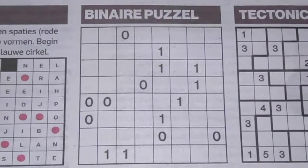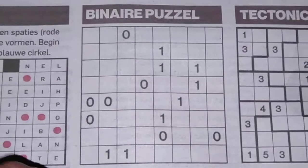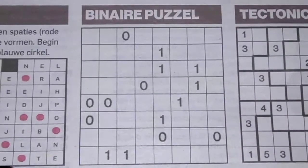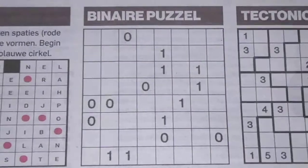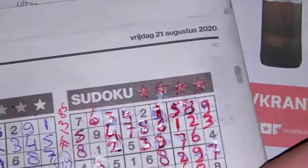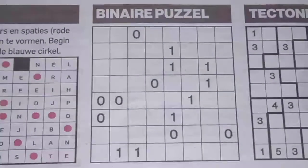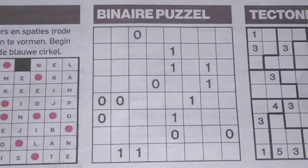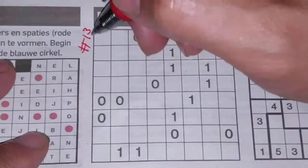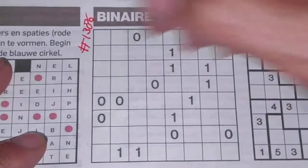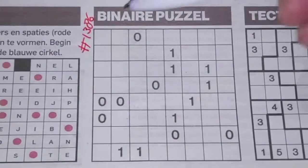Hello everyone, welcome back with the fourth puzzle. The previous one was a mess, so I hope I will recover it. This binary puzzle is in the additional edition of today's newspaper on Friday, August 21st, 2020. This fourth puzzle will be number 1386.